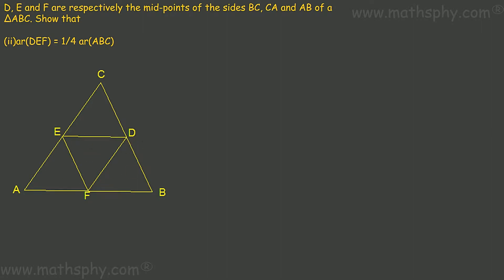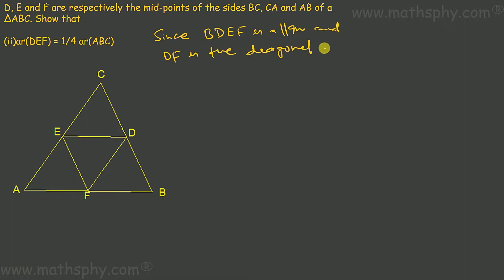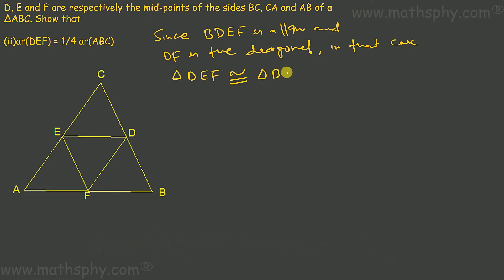So this part is done — BDEF is a parallelogram. Now, DEF is the diagonal of parallelogram BDEF. In that case, we know the theorem: in a parallelogram, a diagonal bisects it into two congruent triangles. So triangle DEF would be congruent to triangle BDF. In that case, area of triangle DEF equals area of triangle BDF. The same way we proved BDEF is a parallelogram, we can prove AEDF is also a parallelogram.